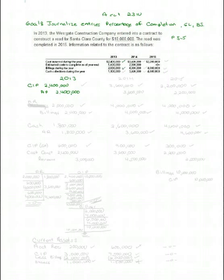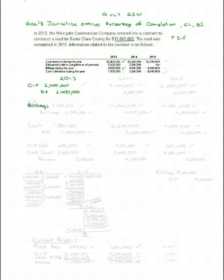Let's move down now to billings. We bill our customers along the way when we're doing long-term construction contracts because you can't really afford to pay for all of a $10,000,000 project out of your pocket. We need to pass some of those costs on to our customers — we do that through billings. We debit accounts receivable because we bill our customers for $2,000,000, and we credit billings. That's common to the construction industry, and billings is a contra account — it's contra to construction in progress.